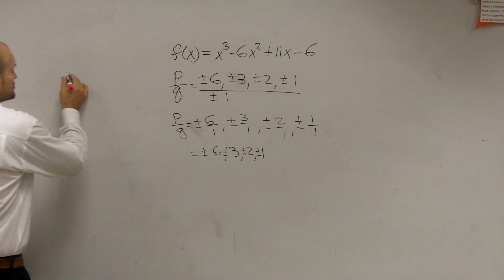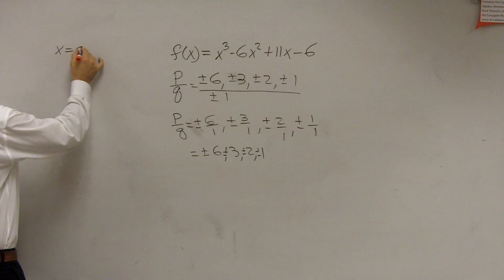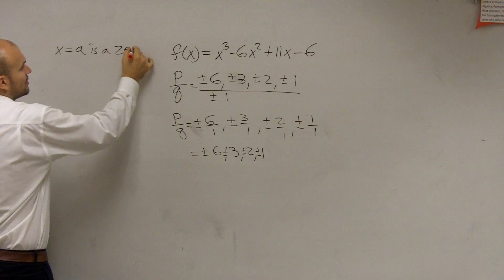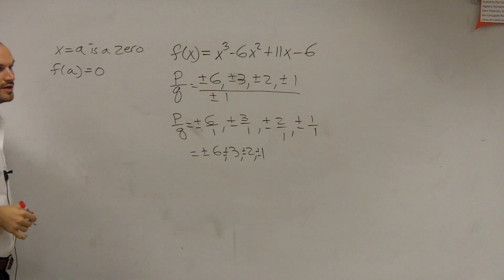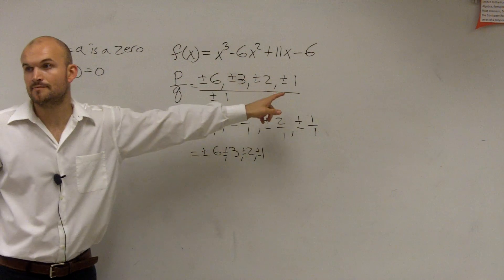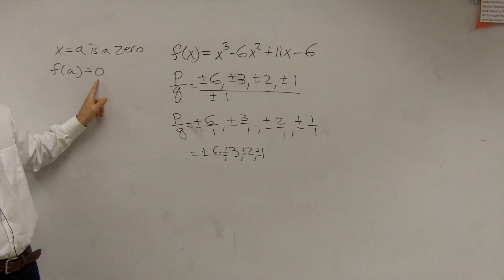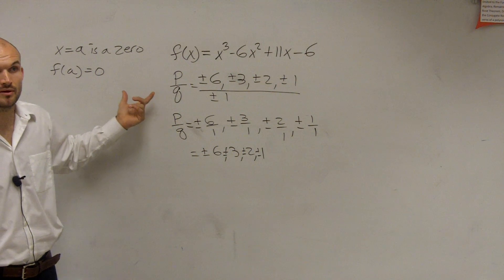Then the other thing comes into play. You could also use the remainder theorem. Remember the remainder theorem says if x equals a is a zero, then f of a equals 0. So you could also plug each one of these into your function and see if you get 0 when you evaluate for it. If you do, then you proved it's a zero.